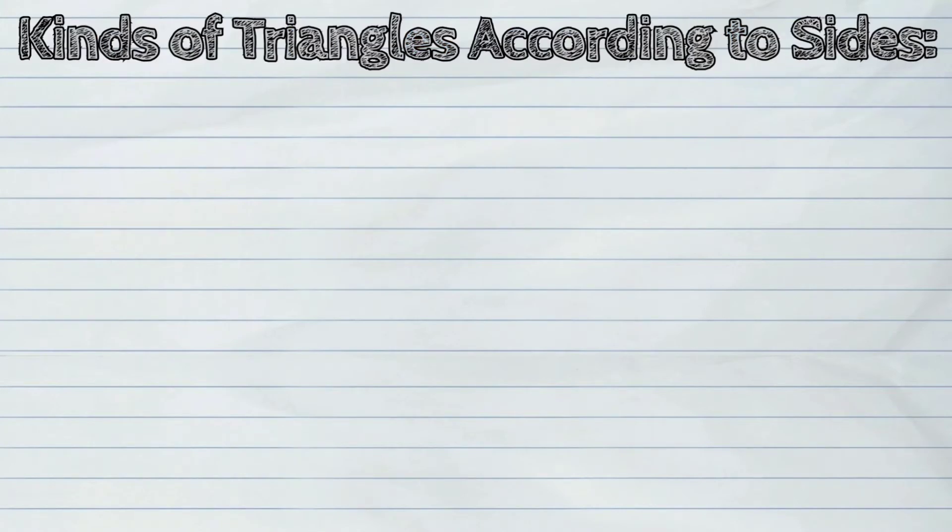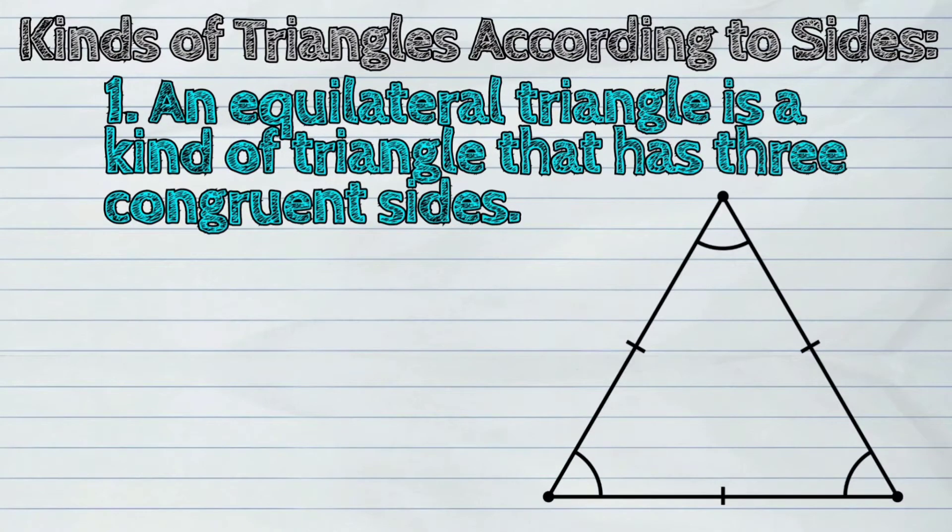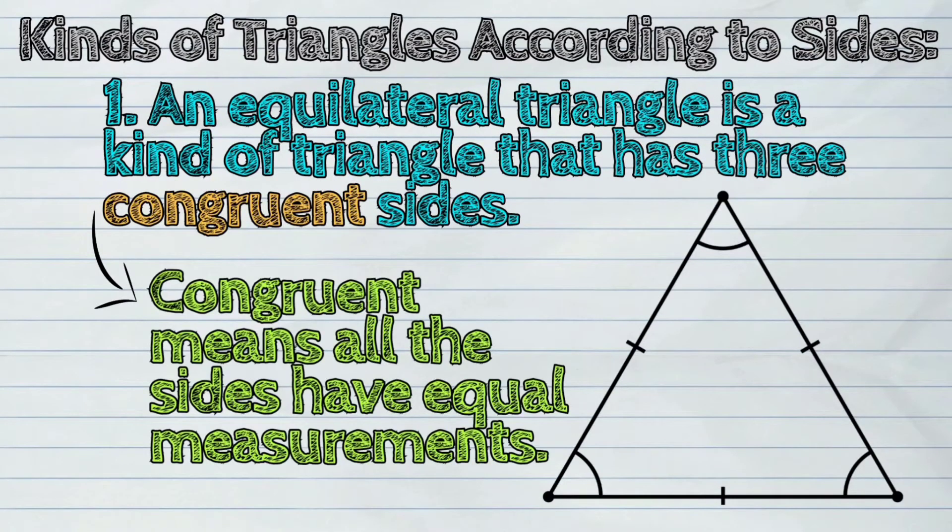Triangles can be classified according to the measurement of its sides. An equilateral triangle is a kind of triangle that has three congruent sides. Congruent means all the sides have equal measurements.